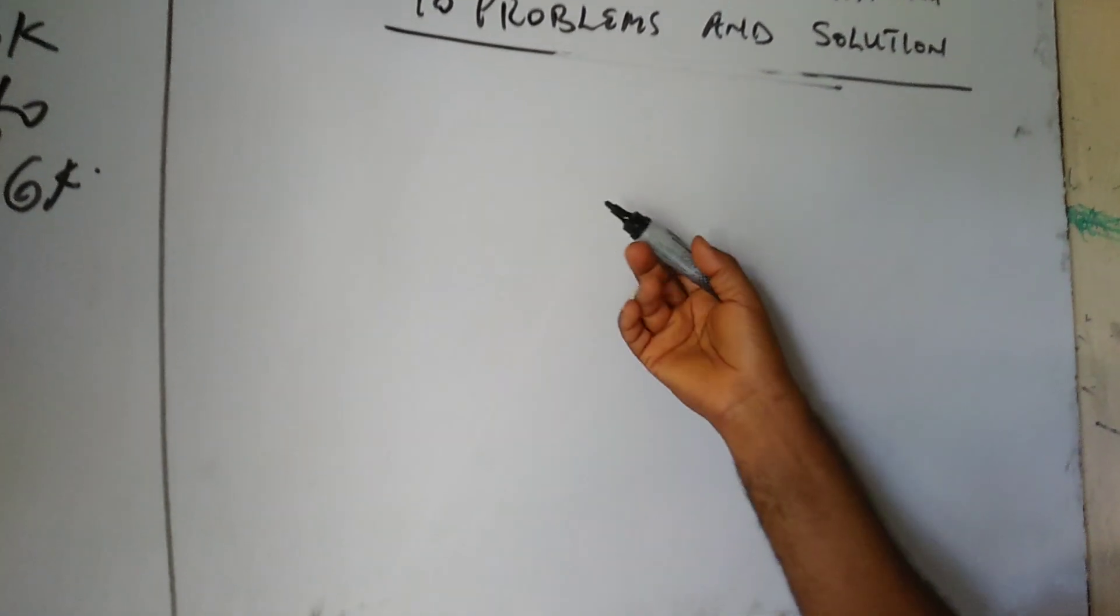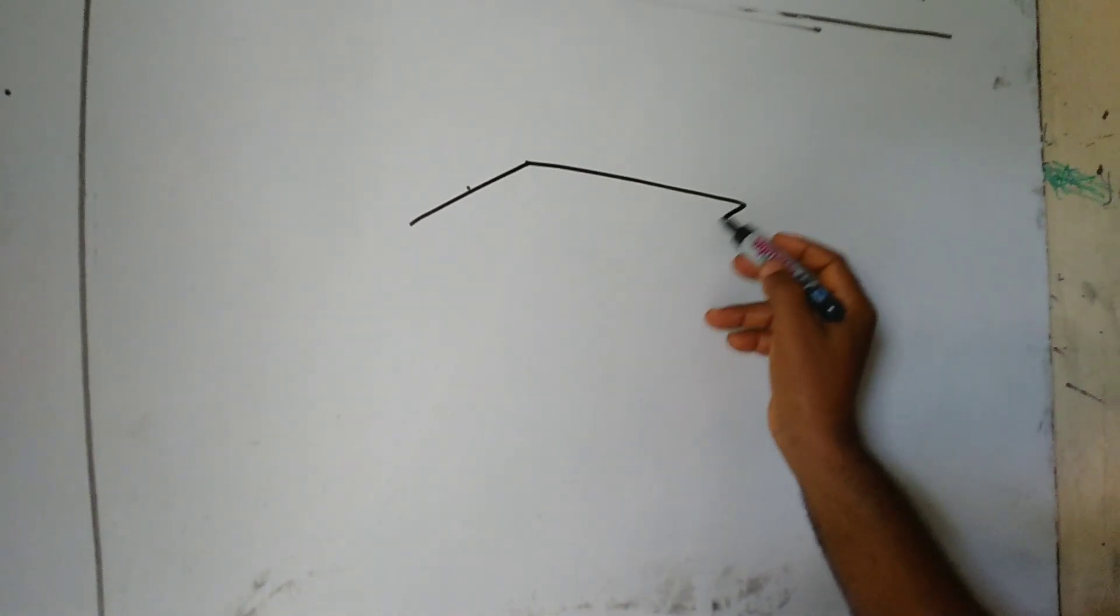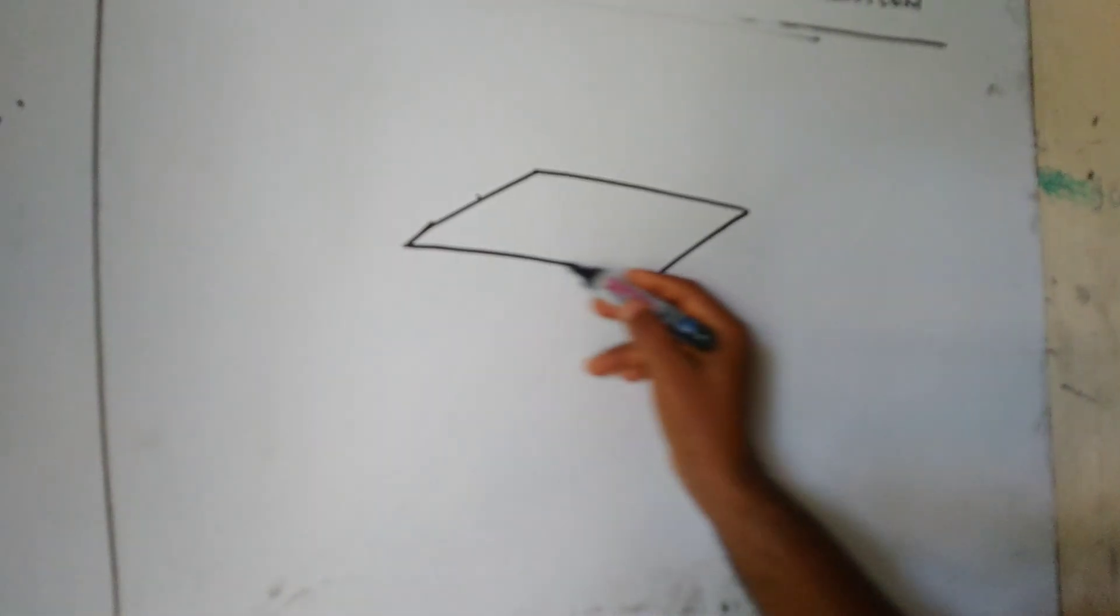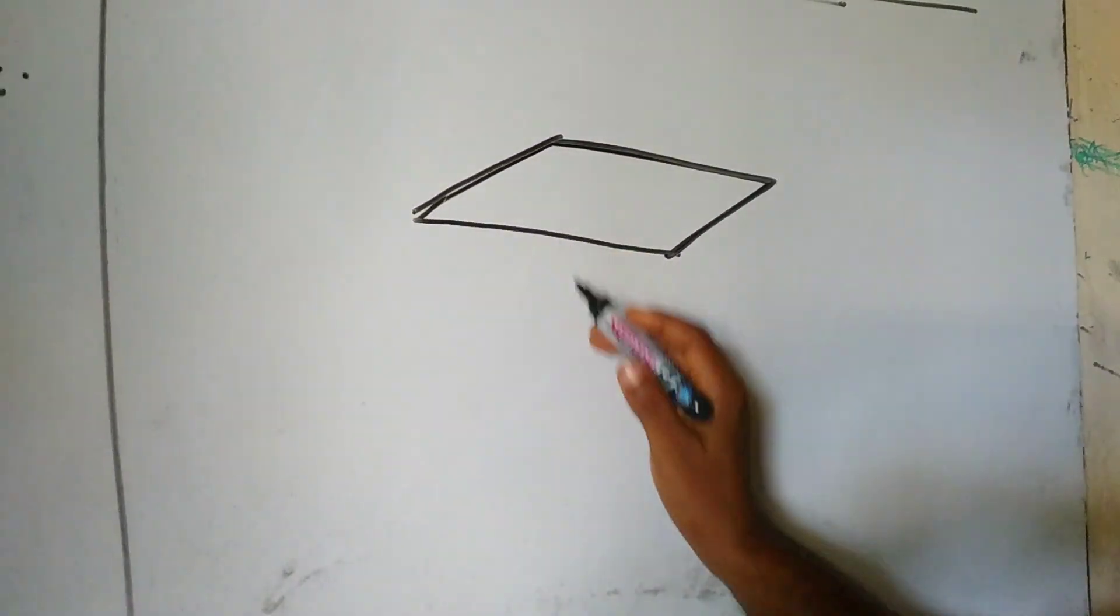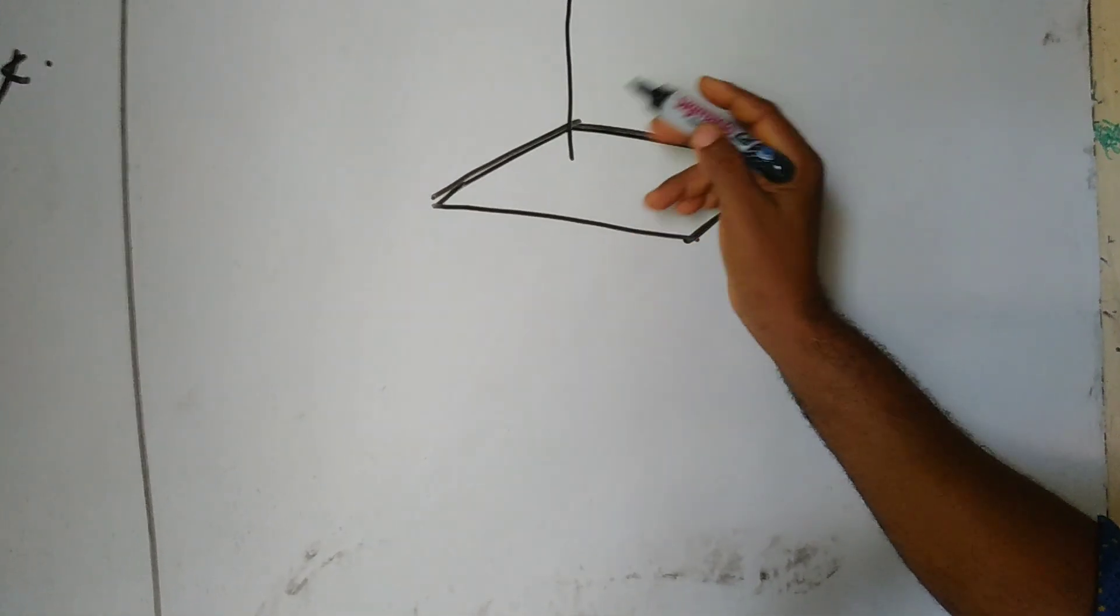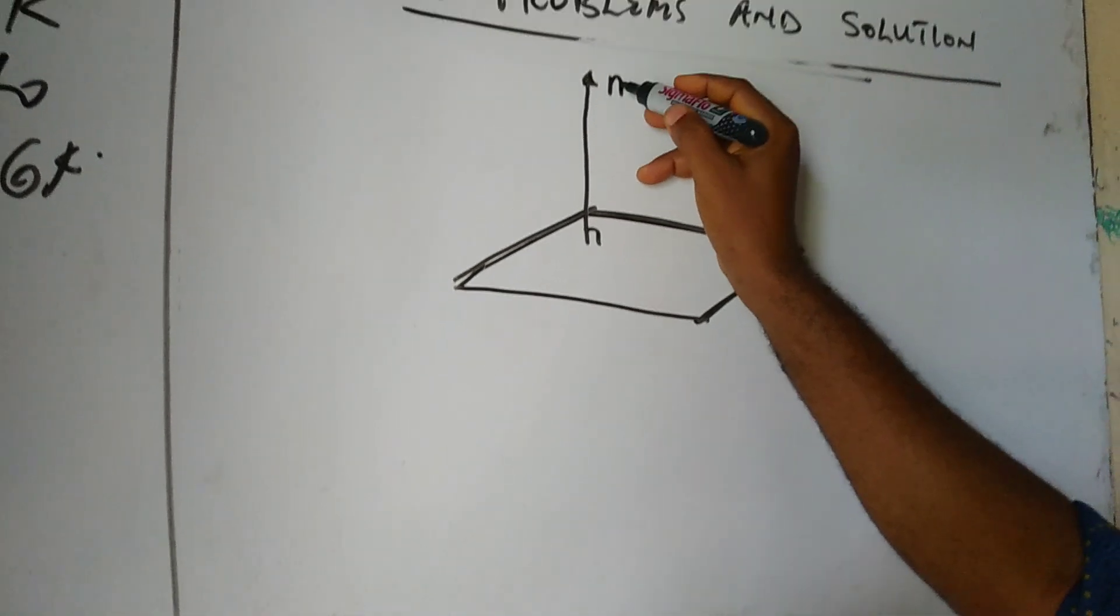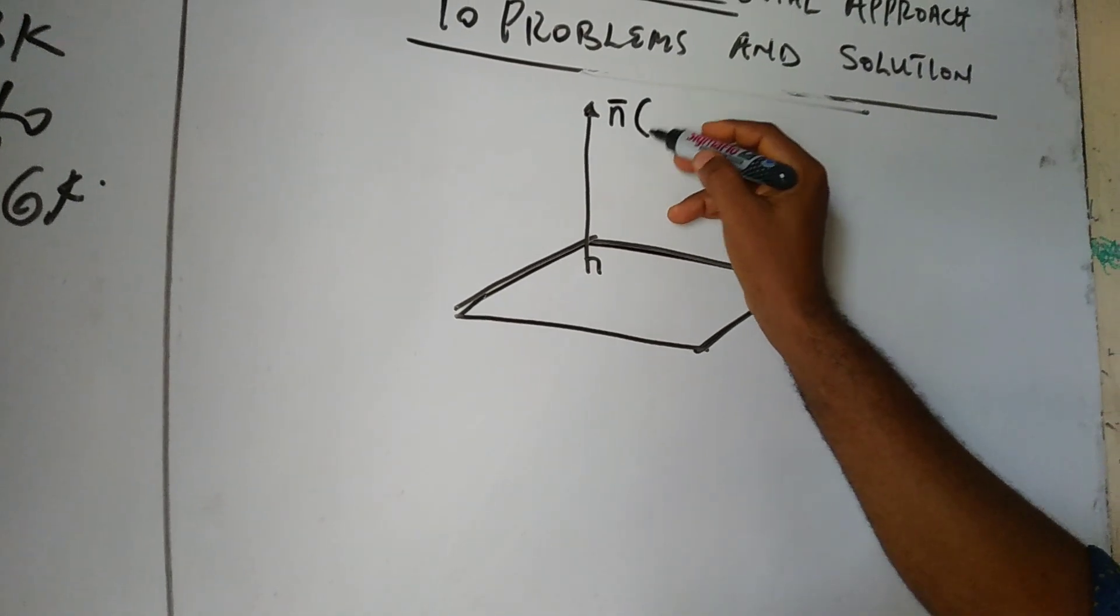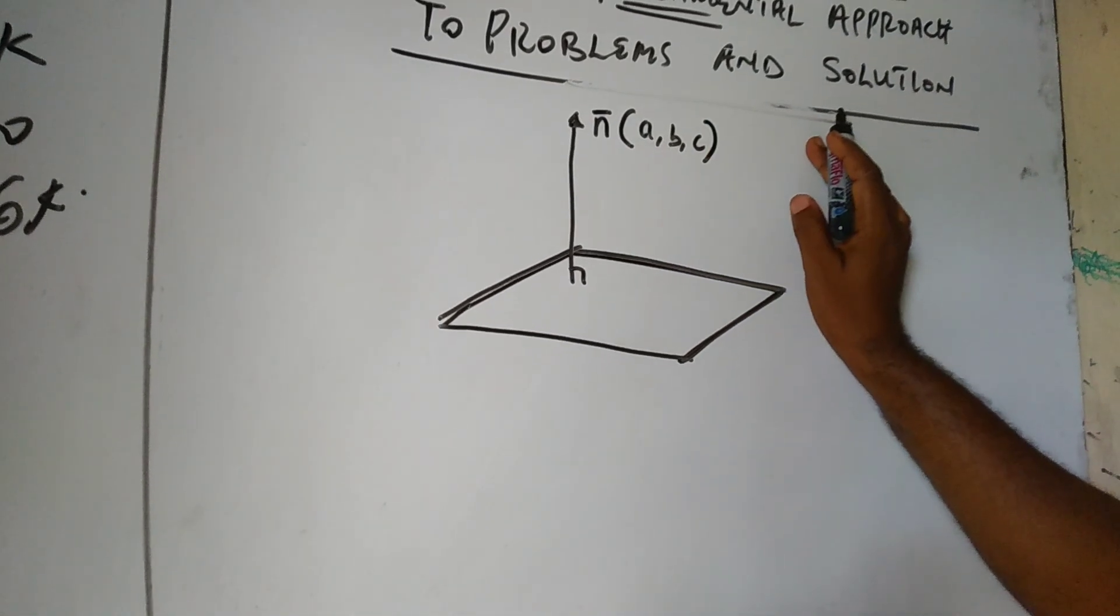Now, what do we mean by a plane? A plane is similar to the floor surface. Let's say we have this particular plane. It's a two-dimensional geometrical expression. Now, this is a plane. Let's say there is a particular perpendicular vector along this plane. Let's call it vector N with a component A, B, C.